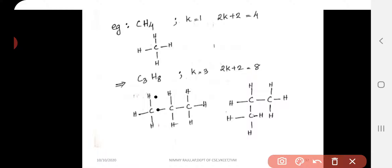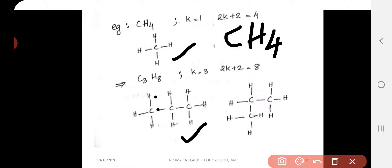When carbon atoms equal 1, for example 1 carbon atom and 4 hydrogen atoms, that means 1 carbon atom has 4 bonds. In graphical representation, this vertex — the carbon — has 4 edges connecting to the 4 hydrogen vertices.